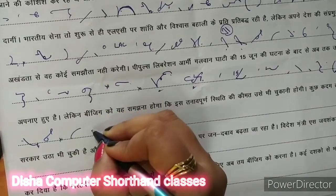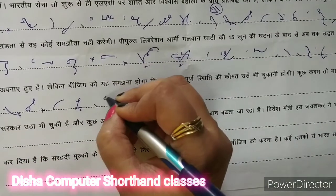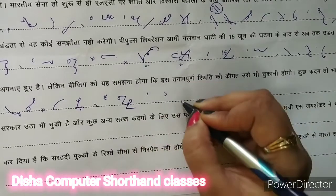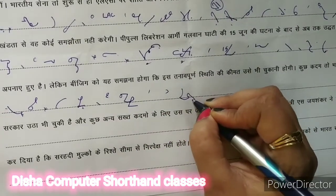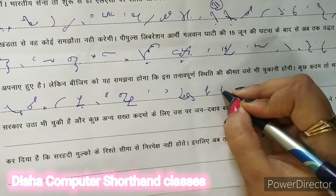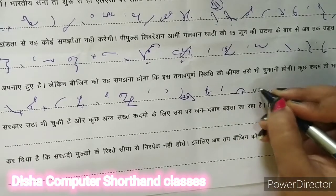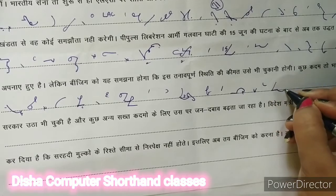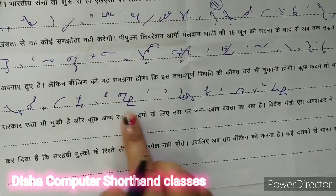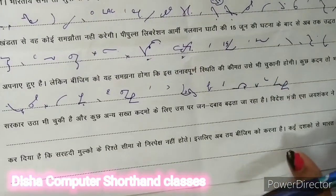लेकिन बीजिंग को यह समझना होगा की इस तनावपूर्ण — इस बाद का शॉट फॉर में एड करेंगे — इस्थिती की कीमत उसे भी चुकानी होगी। जैसे यहाँ पर 'होगा' बनाया था, यहाँ पर 'होगी' बनाया है — डिफ्रेंस यह है कि 'एकी' साउंड के साथ इसको डिफाइन किया है, जो कि जरूरी है।